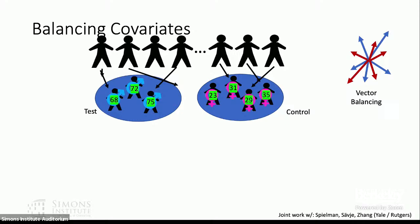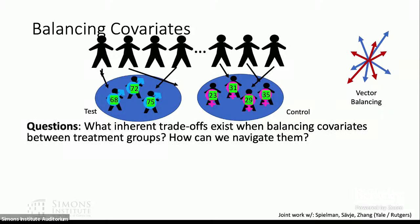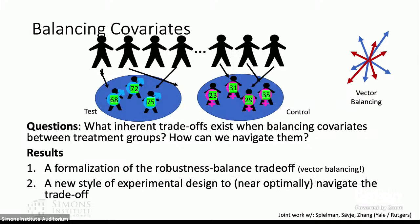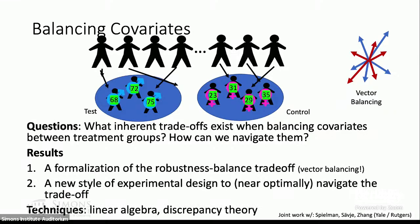The questions are: what is the inherent trade-off when balancing covariates between treatment groups, when do you want balance versus more randomness, and given this trade-off how can we navigate it? Our main results are: first, a formalization of what we call the robustness-balance trade-off, viewed as a randomized vector balancing problem; and second, given that formalization, we construct a new style of experimental design to near-optimally navigate this trade-off. The techniques are linear algebra and some discrepancy theory, though for the current version on arXiv you don't need to know any discrepancy theory to understand our results.